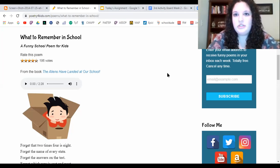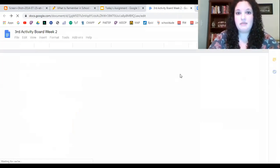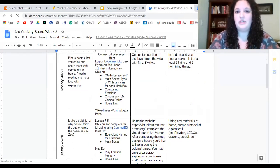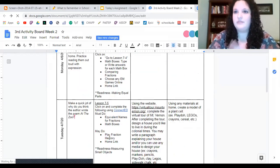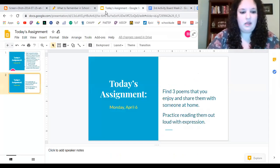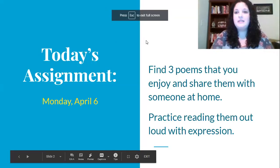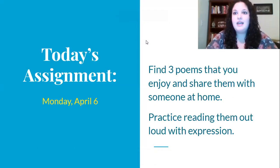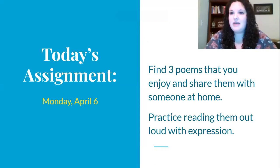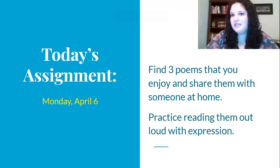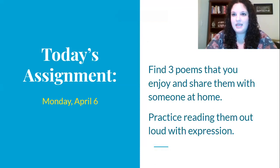You're also going to get an activity board. The ELA section is the first column and it gives you a little activity to do with each video lesson. Today's assignment is to explore poetryforkids.com and find three poems that you enjoy and share them with someone at home — this could be your parent or a sibling. I want you to practice reading them out loud with expression, because as you heard when I read my poem, there's sort of a rhythm that goes along with poems and they're really fun to read.